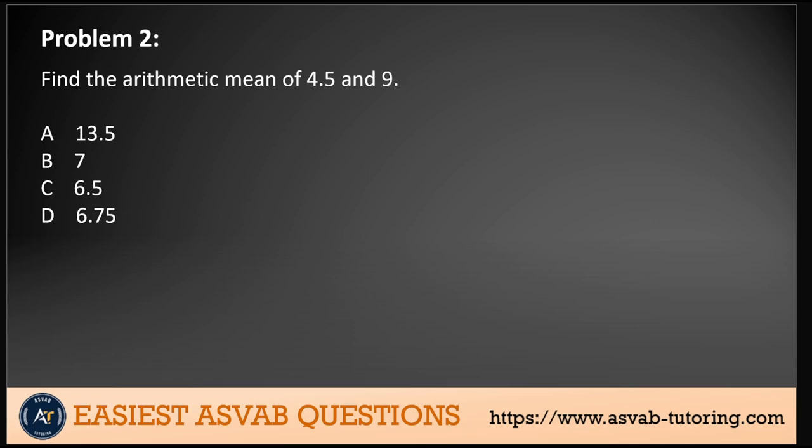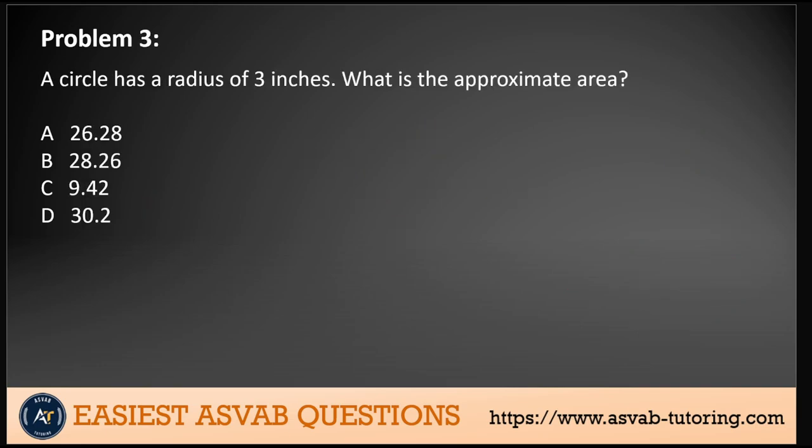Problem 2: Find the arithmetic mean of 4.5 and 9. I'll let you try it out yourself. To find the arithmetic mean, we add 4.5 and 9 together and divide by 2 since there are two numbers, which gives us 13.5 divided by 2, which equals 6.75. Moving on to the next question.